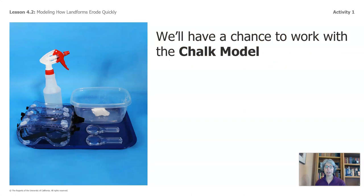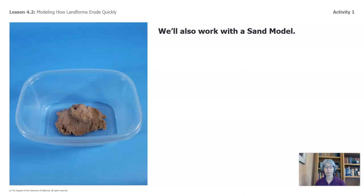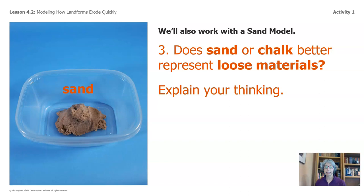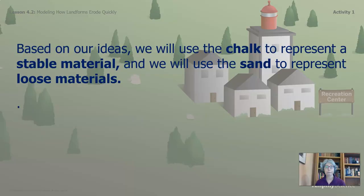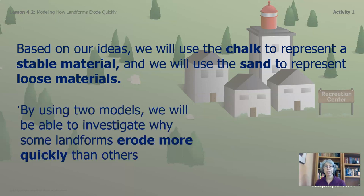We'll have a chance to work with a chalk model in this video, and we'll also work with a sand model. Does sand or chalk better represent loose materials? Sand better represents loose material because it is made of smaller rocks. Based on our ideas, we will use the chalk to represent a stable material, and we will use the sand to represent loose materials. By using two models, we will be able to investigate why some landforms erode more quickly than others.